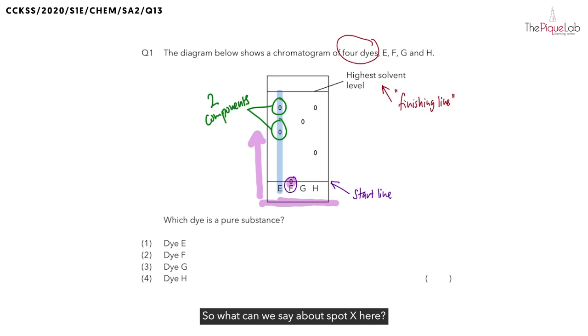So what can we say about spot X here? The one that is closer to the finishing line. Do you think it has moved faster or slower? Since it is closer to the finishing line, it has actually moved faster. This means that that component is more soluble in the solvent.